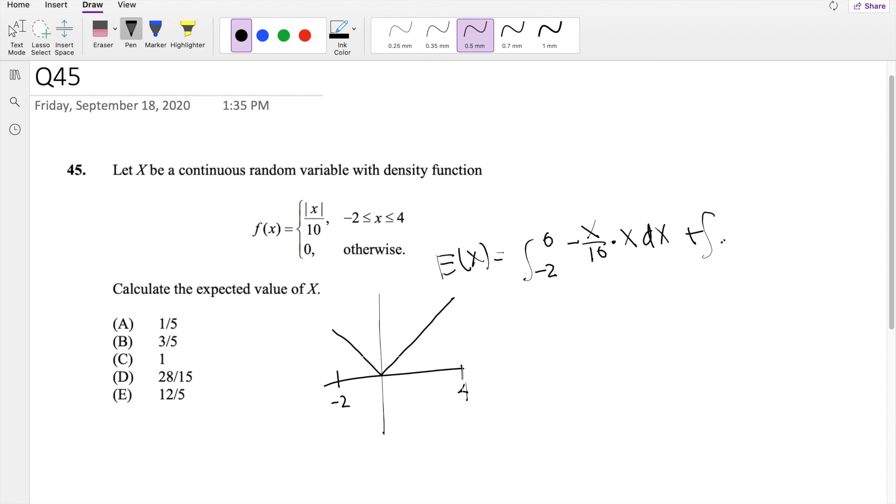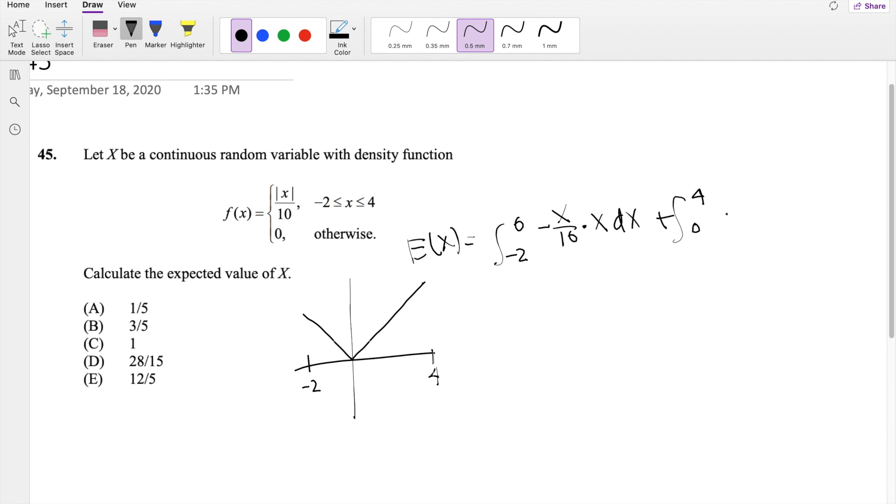And from 0 to positive 4, it is upward sloping. So it's going to be x over 10 times x dx.